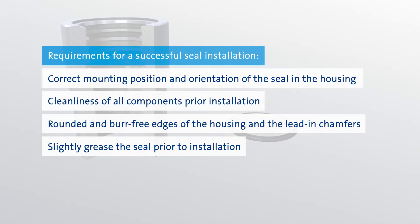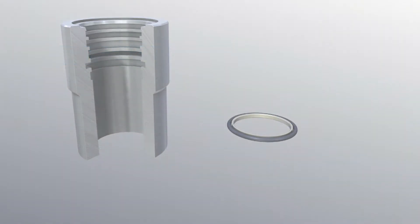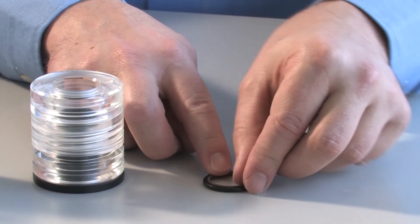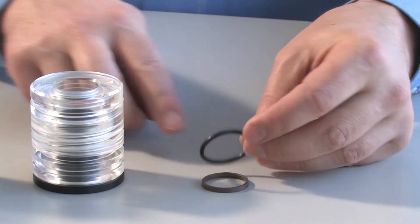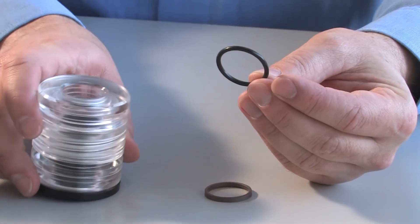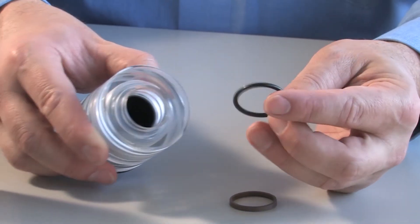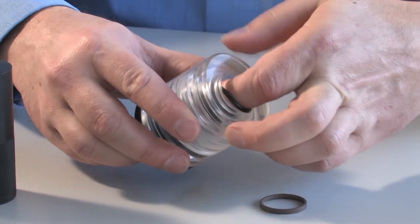When mounting seals which consist of two separate parts, such as those of the Merkle Omegat series, the first step is to place the elastomeric preload element into the designated housing groove.